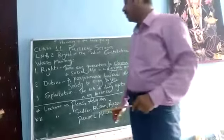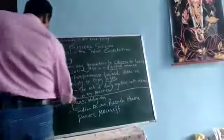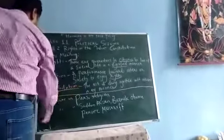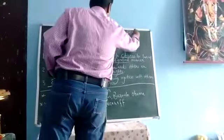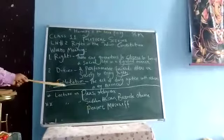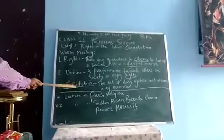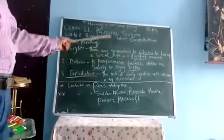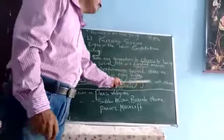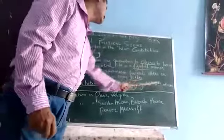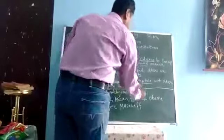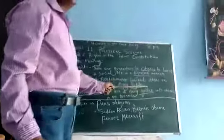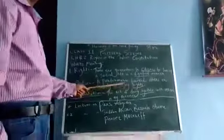Now number 3, this is very important and will come as a long portion for 8 marks, which is exploitation. This is exploitation: the act of doing injustice with others in any manner. The key word here is injustice — that means when we are doing cheating.